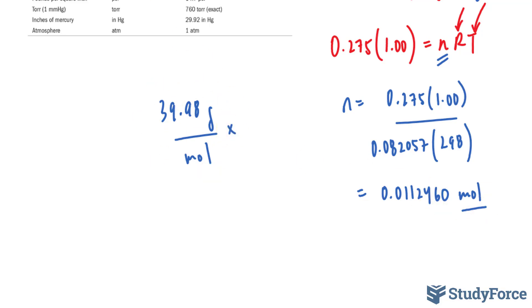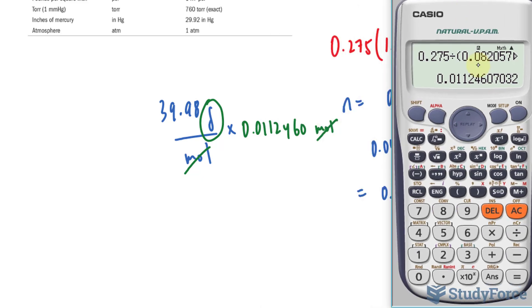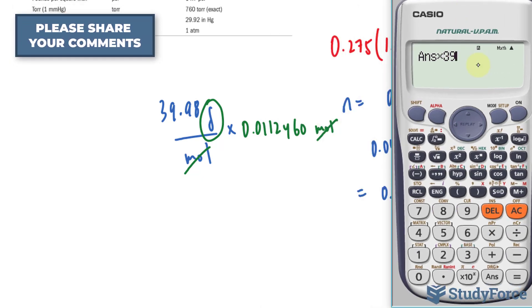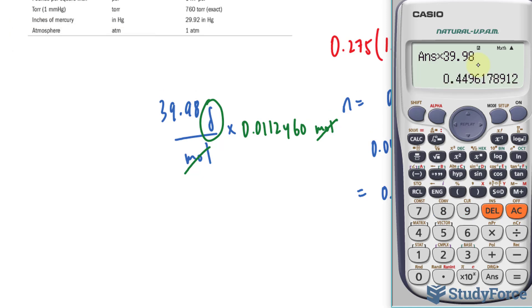And I'll multiply this by this number. Because by multiplying it the way it is by this number, 0.0112460, the mole unit here will cancel out with the mole unit here, giving me the mass in grams. Let's go ahead and do that. We have the number that's on the screen times 39.98.